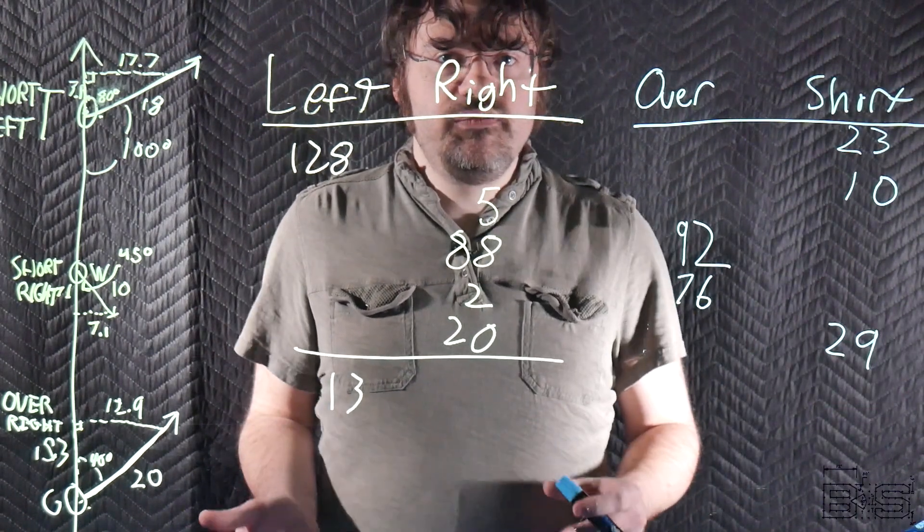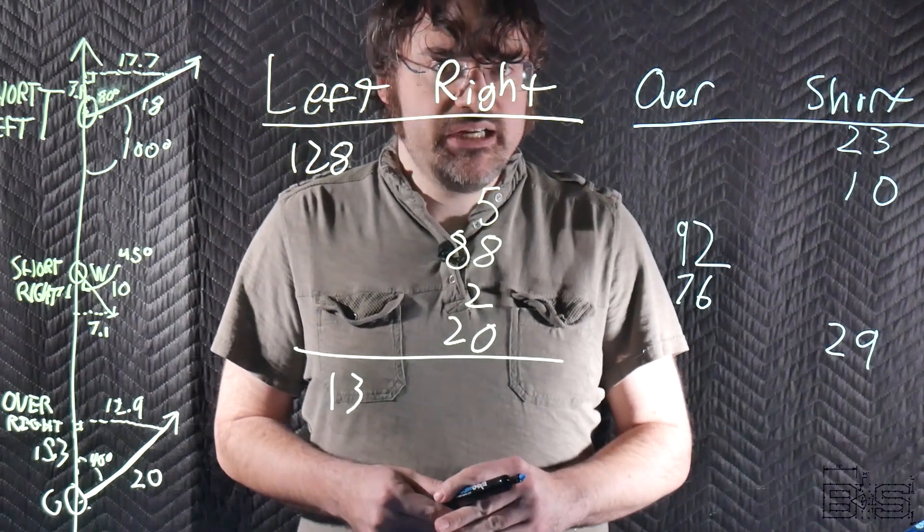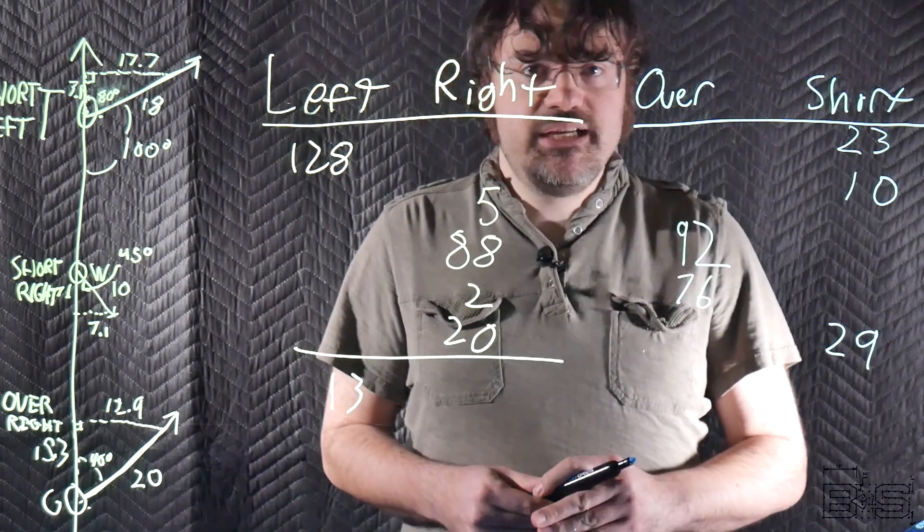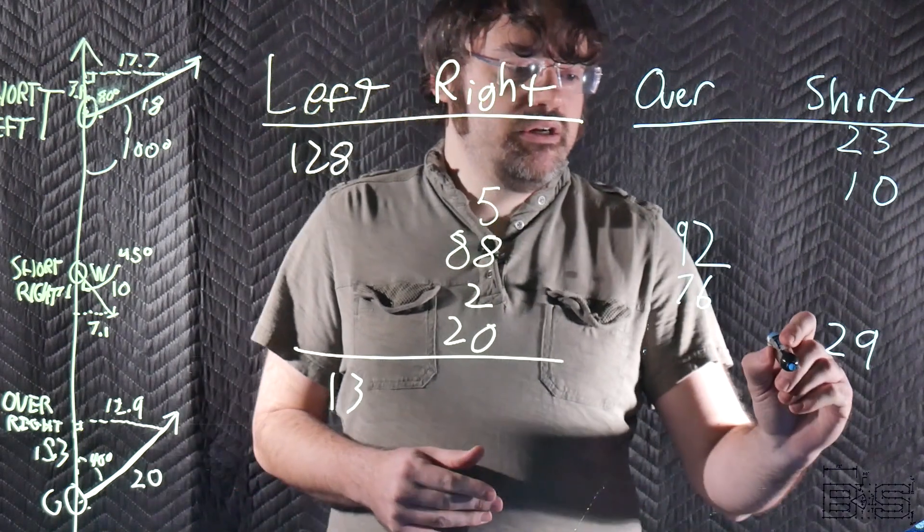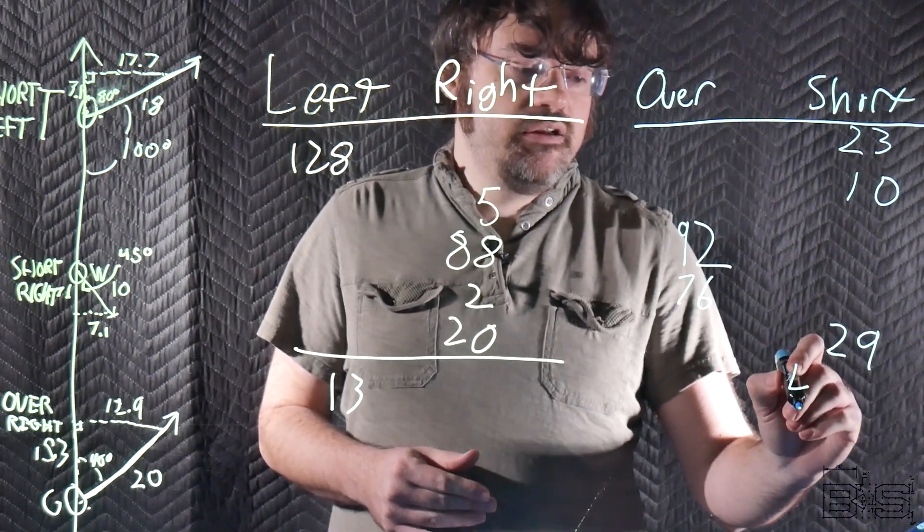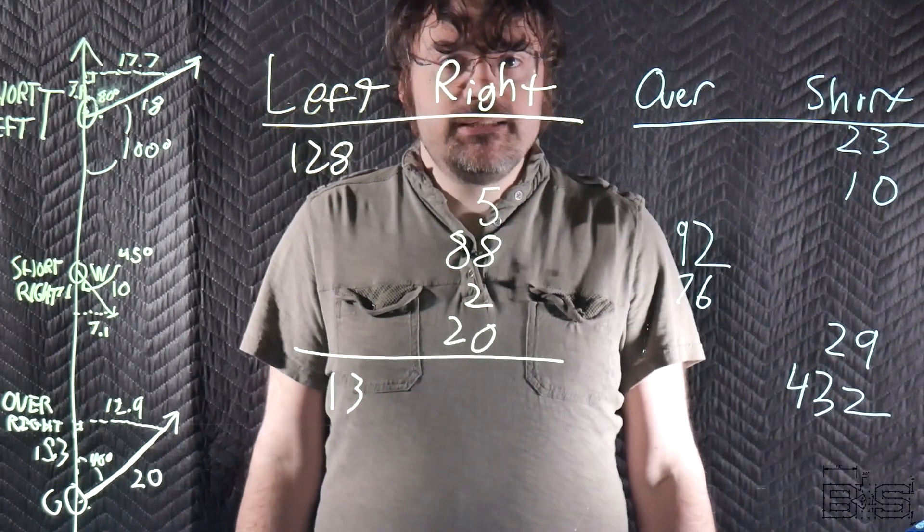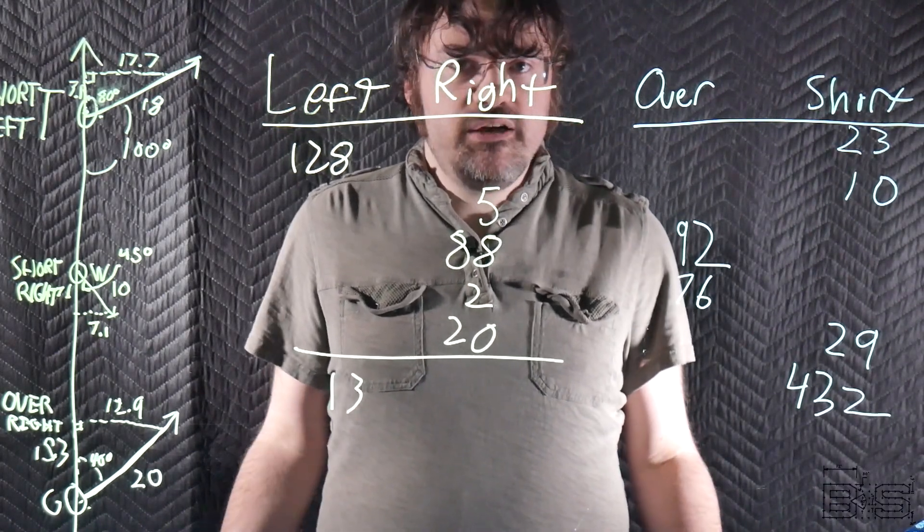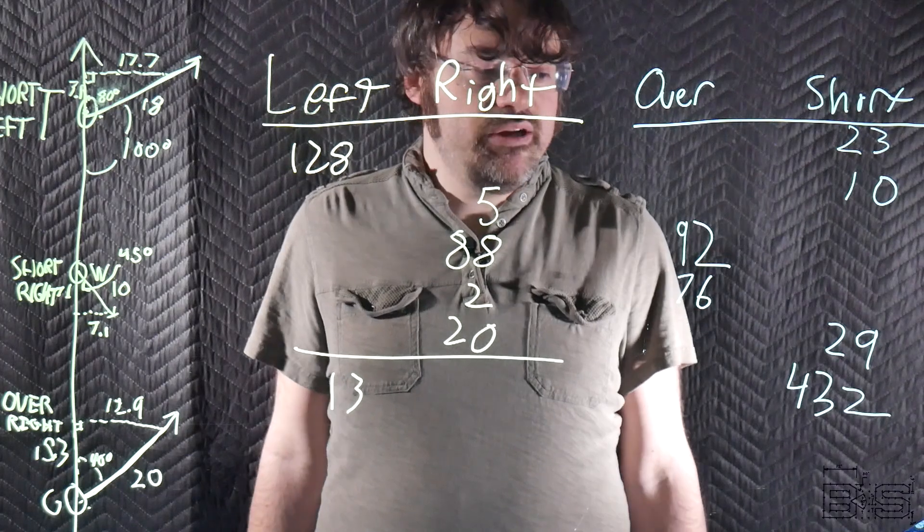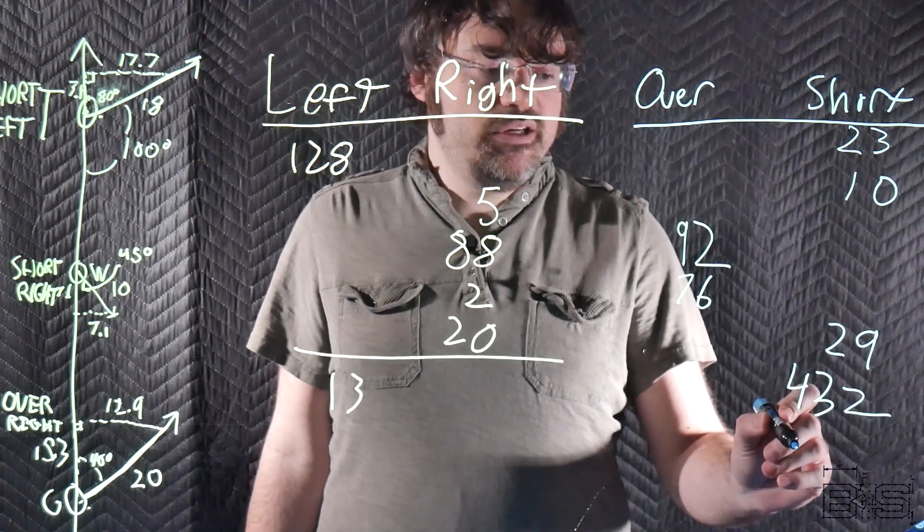Now erosion of the gun bore slows us down by 60 feet per second. So 60 divided by 10 times 72 is holy mother a dreadnought 432 yards. Time to reline the guns. Now we already worked out our air density. That'll shorten us by 100 yards.